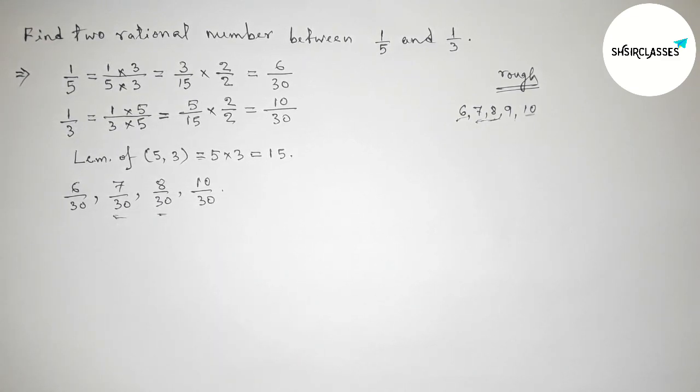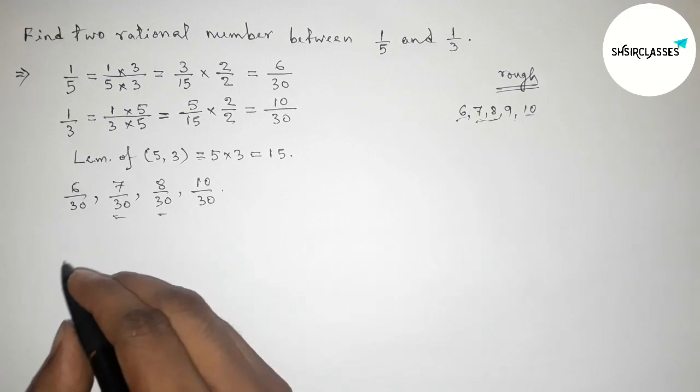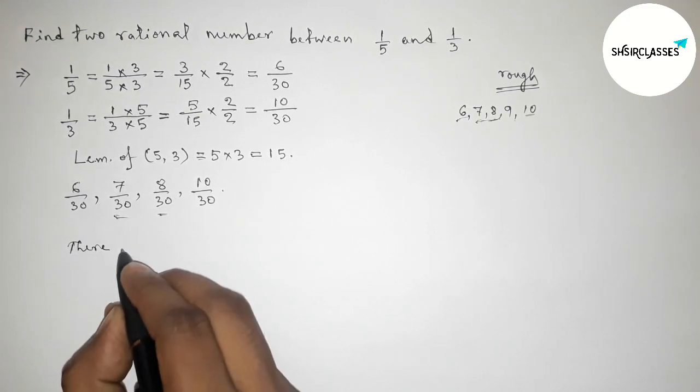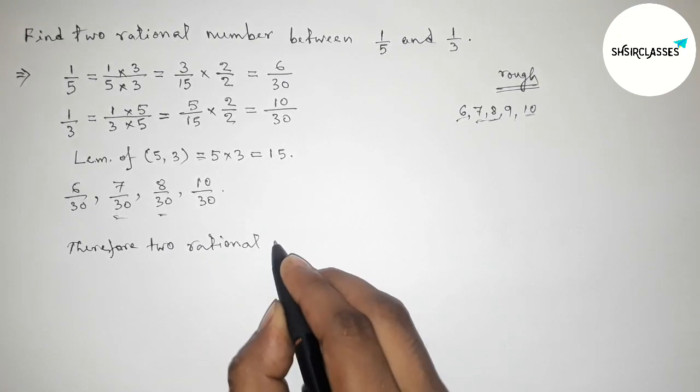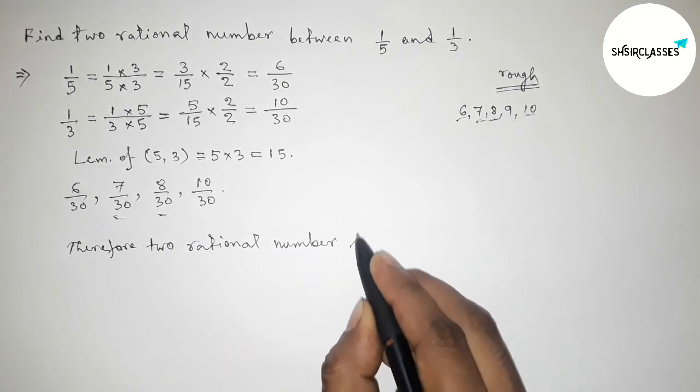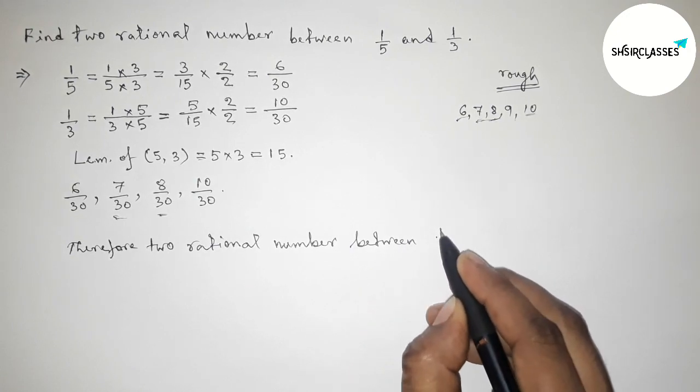Between these two, these are two required rational numbers between 1 by 5 and 1 by 3. Therefore, the two required rational numbers between 1 by 5 and 1 by 3 are: